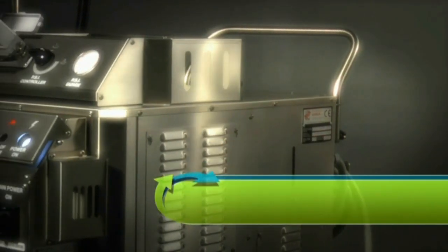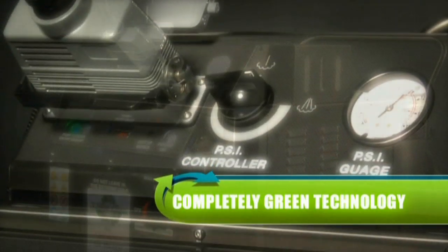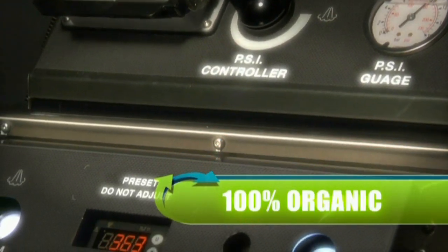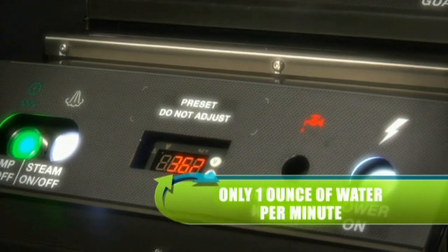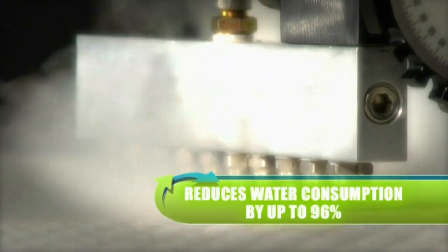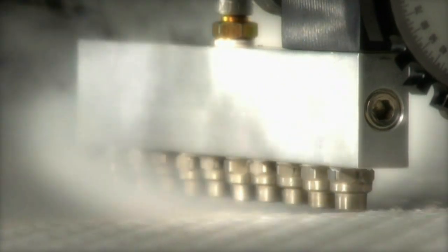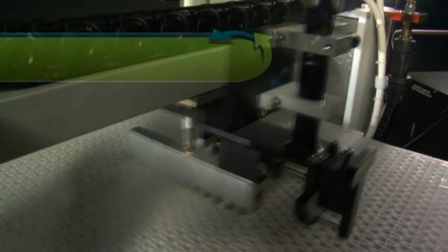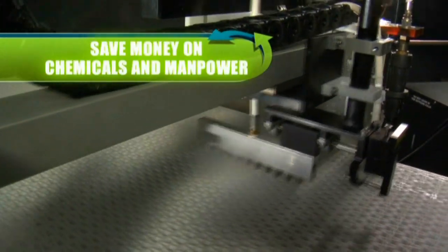Extreme Steam is a completely green technology, 100% organic, using only one ounce of water per minute, drastically reducing water consumption by up to 96%. Sanitizing is now possible in an environmentally responsible way. Actually increase your sustainability while saving money on chemicals and manpower.